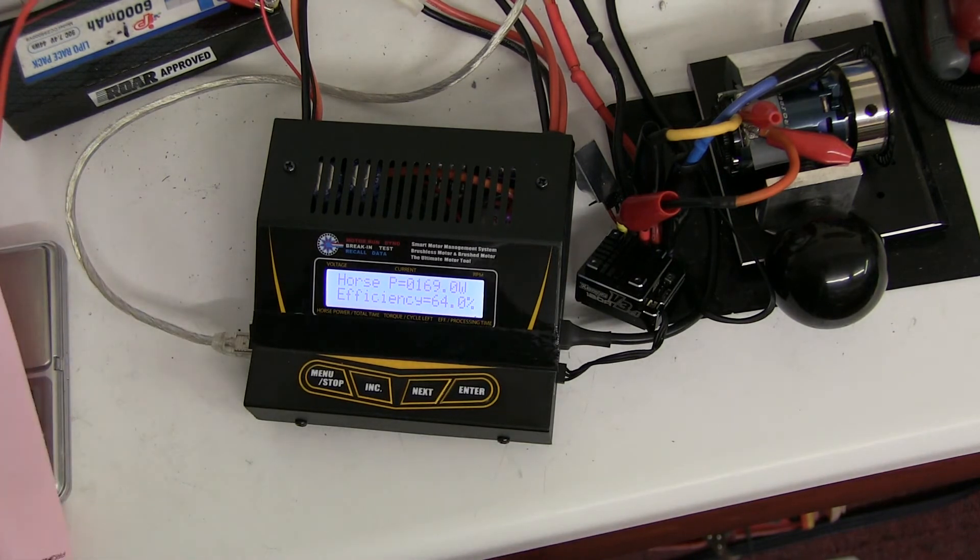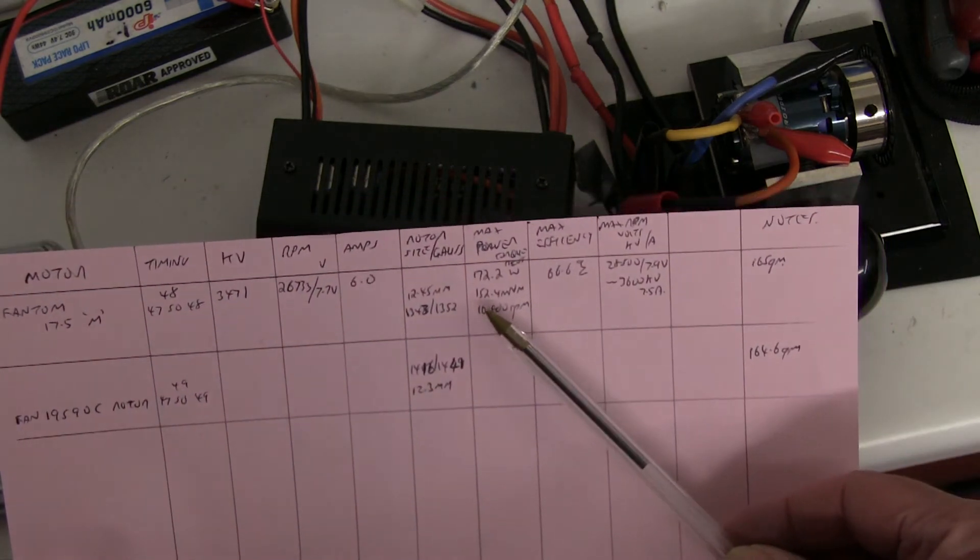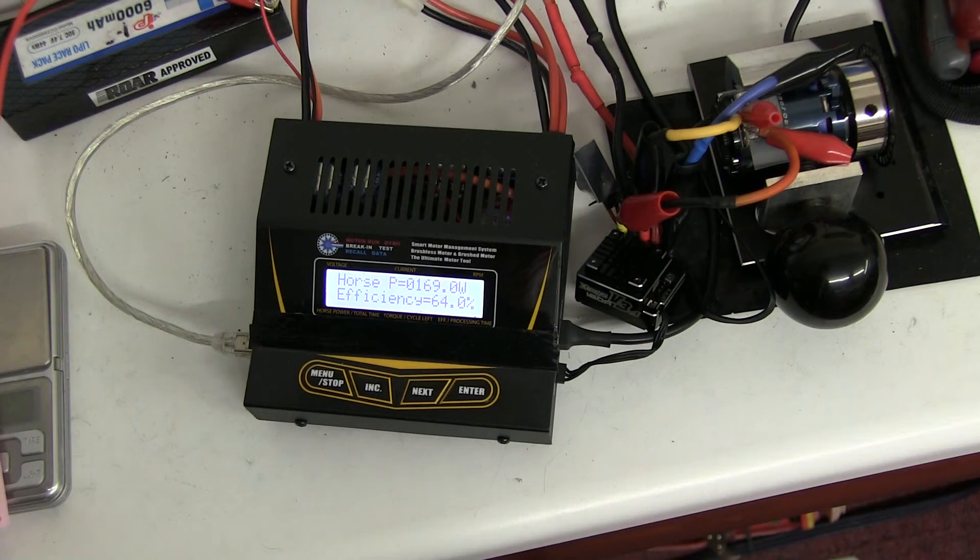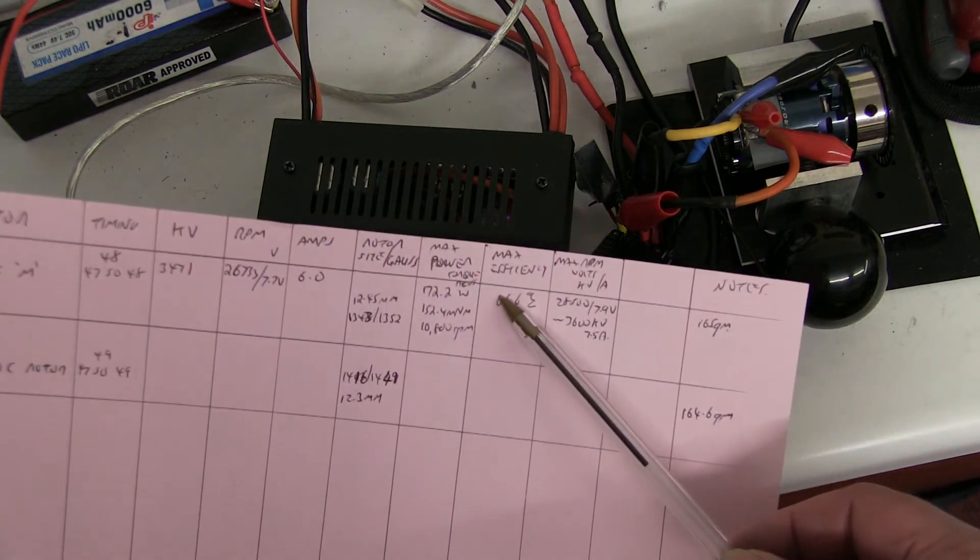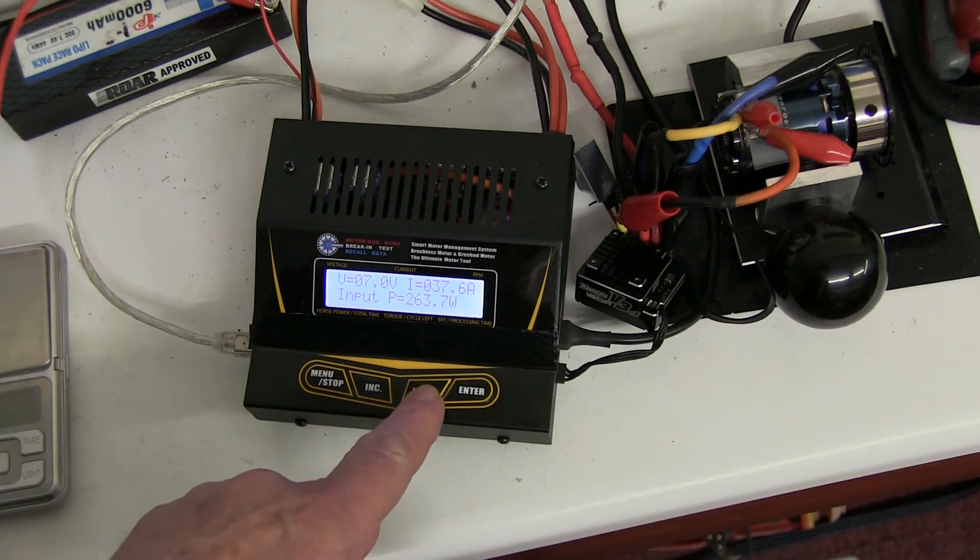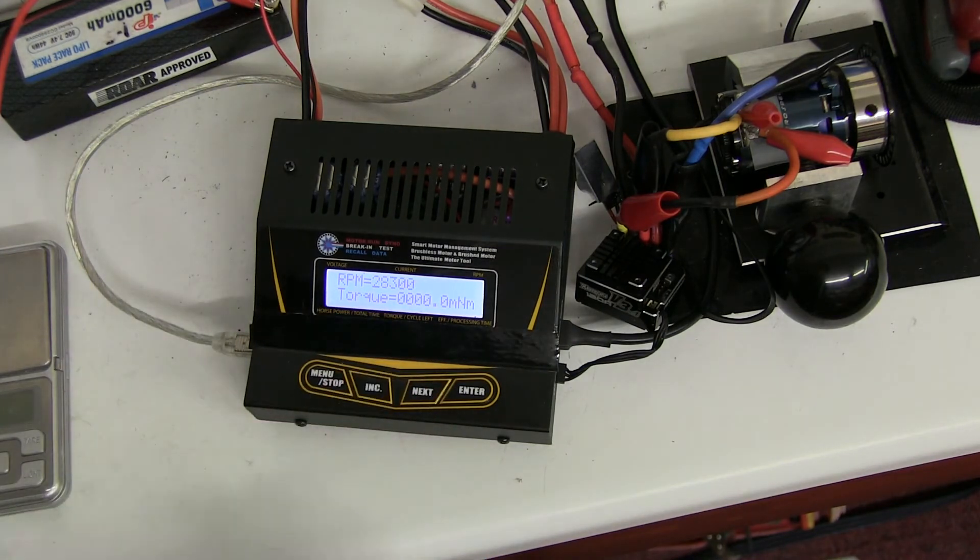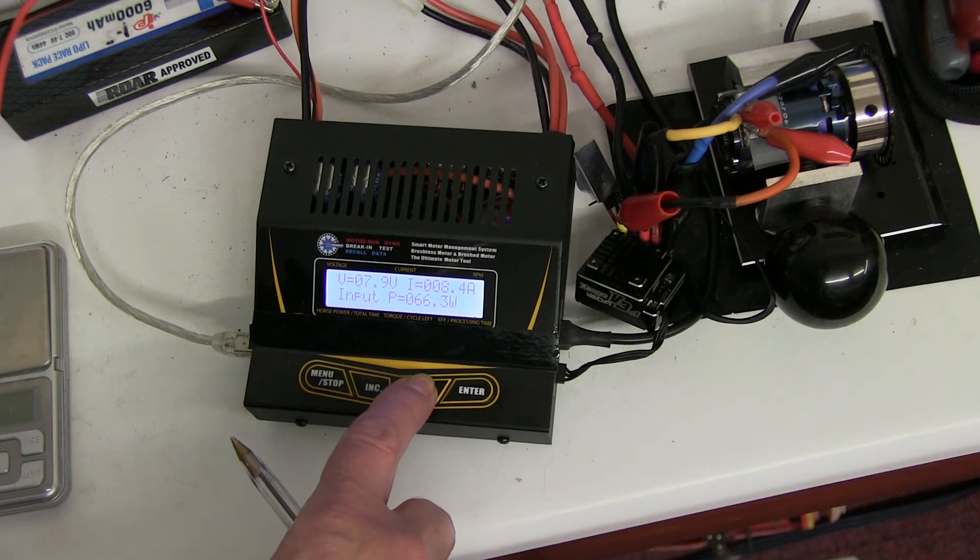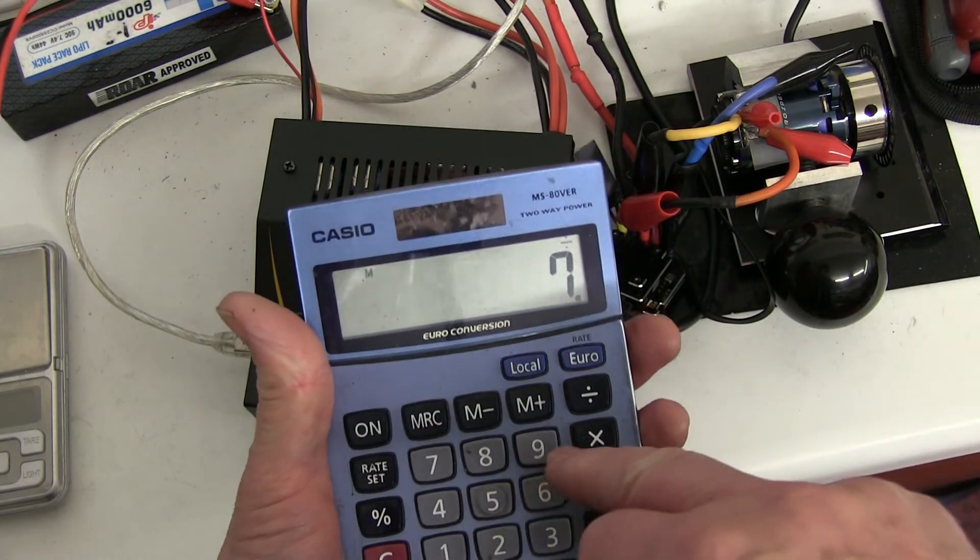152 torque and 169 watts horsepower. Before it was 172 watts and 152 torque at 10.8. So the efficiency is 64 percent. Last time it was about 66 percent. So there doesn't seem to be much improvement.